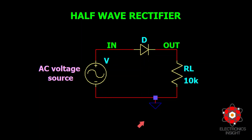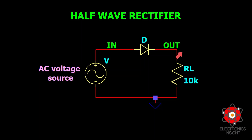Here we will concentrate on the half-wave rectifier circuit, where we have one PN junction diode connected with the AC voltage source. Usually, a transformer is employed which will step down the AC supply voltage and also prevent shocks. The diode helps in rectifying the AC signal into a pulsating DC, which is measured across the load resistor RL.